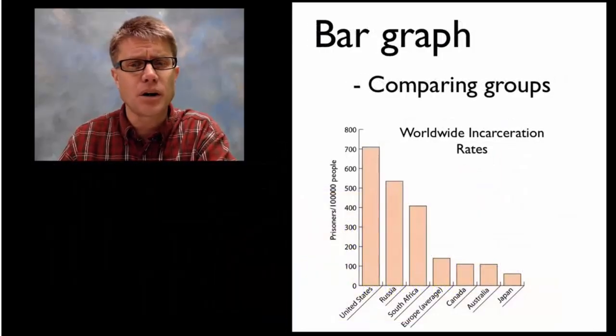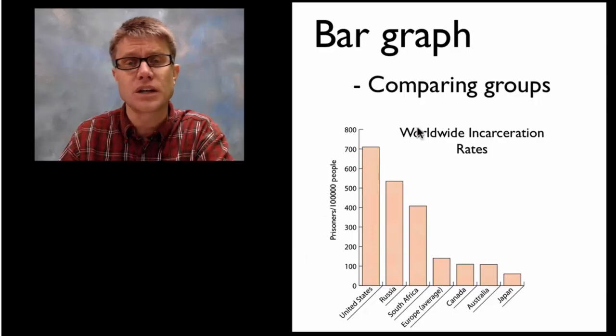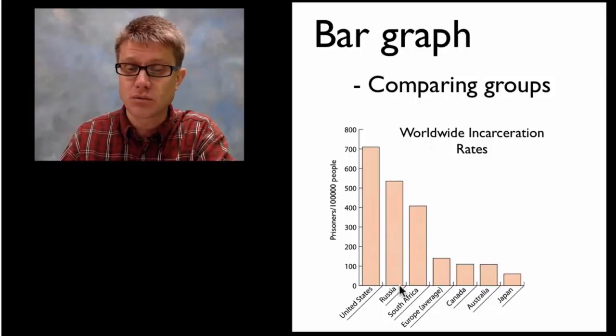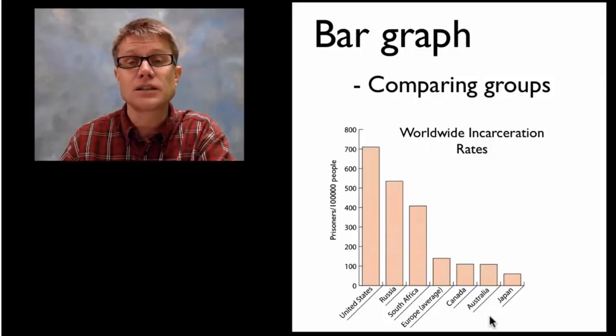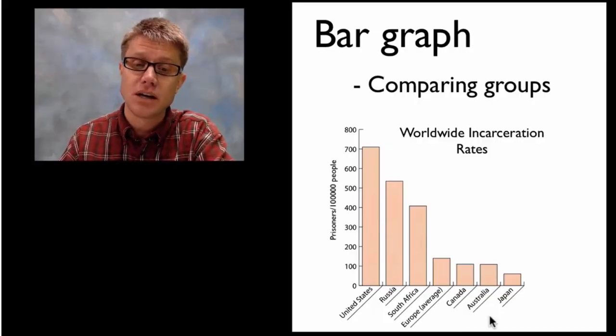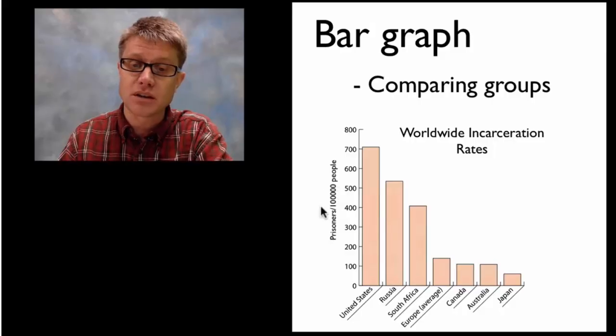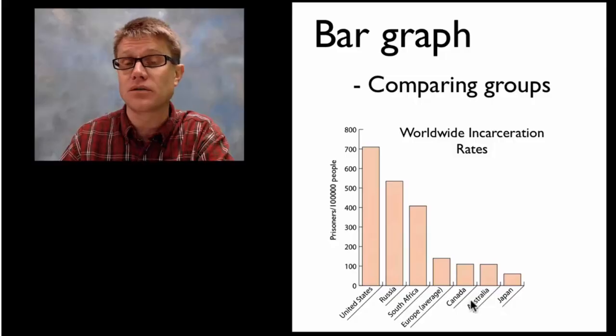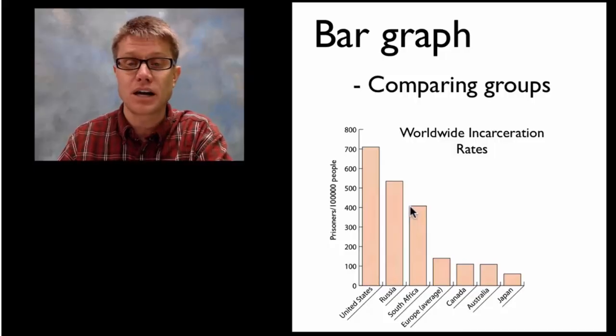What about a bar graph? We use a bar graph if we're comparing two groups together, or more than two groups. In this bar graph we're looking at worldwide incarceration rates, and we're comparing different countries. Let's say in the lab we're measuring how different colors of light affect the rate of photosynthesis. Then we could put the rate of photosynthesis on the y axis and then we'd represent each of those different colors of light using a different bar. Lots of times a bar graph, that bar is going to represent the average or the mean of all the data that we collected.